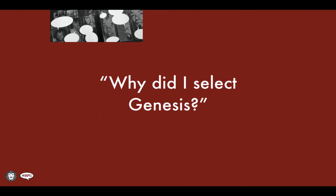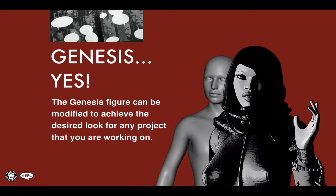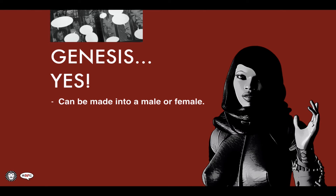So why did I select Genesis? The Genesis figure can be modified to achieve the desired look for any project you're working on. It's highly customizable, and this is what really attracted me to Genesis — I could turn it into a male or female, or even some kind of humanoid monster or alien-looking type thing. Whatever I can imagine, I can turn Genesis into. As an example, that base Genesis figure is what I used to create the character Ashiri, a Kaimana priestess, for my comic Black Sun. Through customizing Genesis with morphs, I'm able to create characters for my book. Genesis can be turned into a male or a female, so it's very versatile.